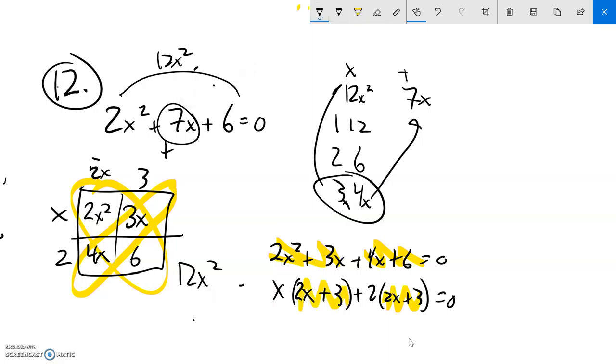I can factor that out now. So if I'm factoring by grouping, 2x plus 3 times x plus 2 equals 0.